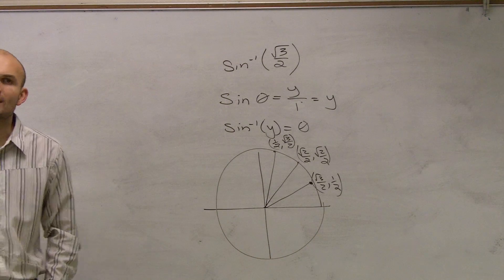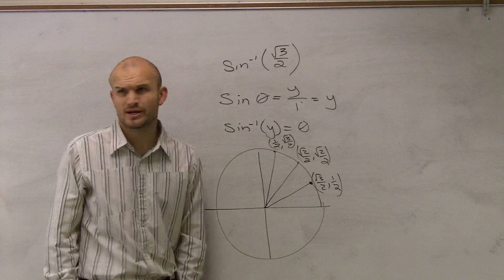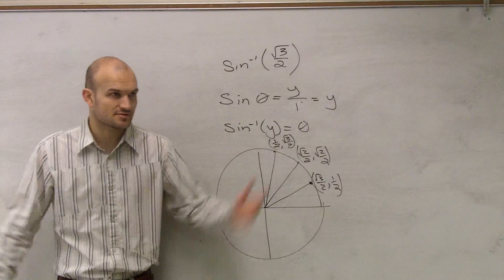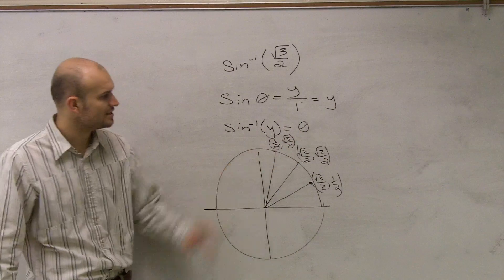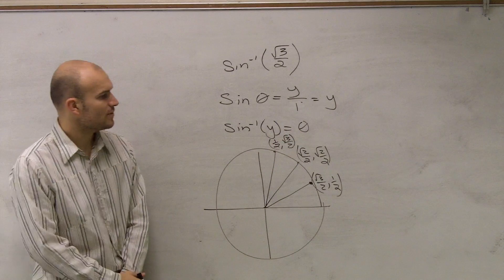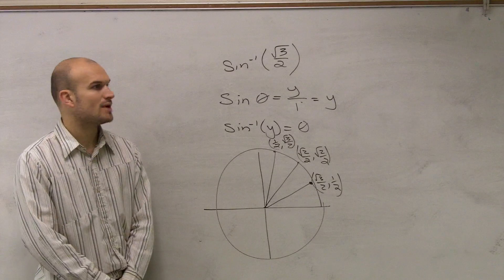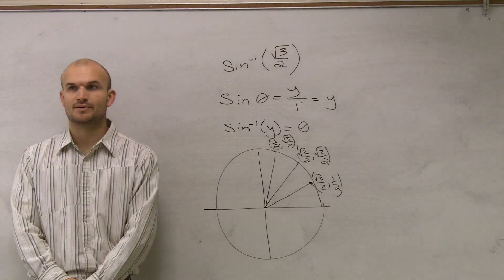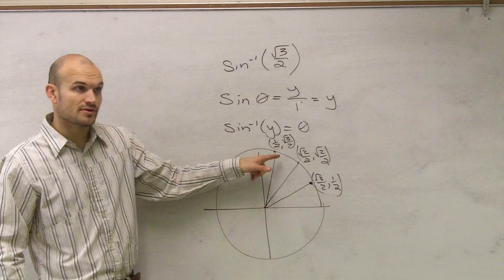That's like the first quadrant of your unit circle. Is everybody with me? I just did the unit circle by memory just for at least the first quadrant. So where is my y coordinate for this going to be radical 3 over 2? That's going to be which point? This one, right?